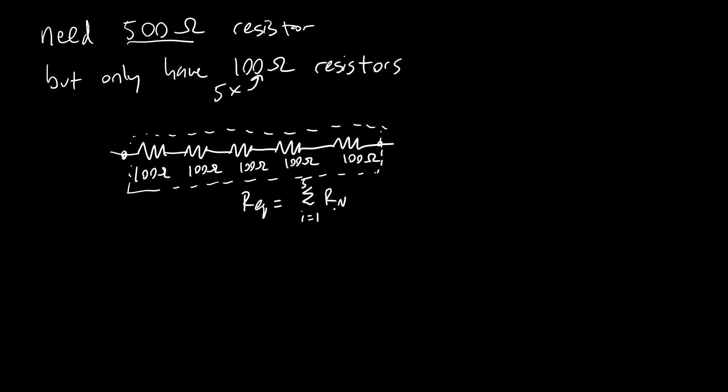Then the total equivalent resistance of this whole unit R_EQ is the sum from i equals 1 to 5 of R_i, where R_i is just 100 each time. So that's going to be 500 ohms.